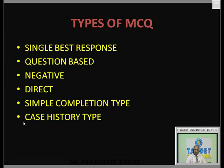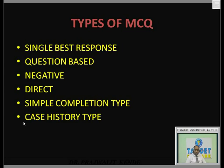Second type is question-based, where a question mark is given and you choose the option. Third is negative type — questions using EXCEPT. Beware of this terminology. In overconfidence, we don't read the stem properly and forget the word EXCEPT and mark the wrong answer. If a question says 'all of the following signs of inferior alveolar block EXCEPT,' out of four options, three are present but one is not. Such questions using NOT or EXCEPT are all negative type questions.